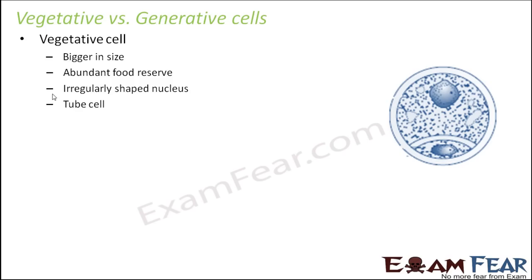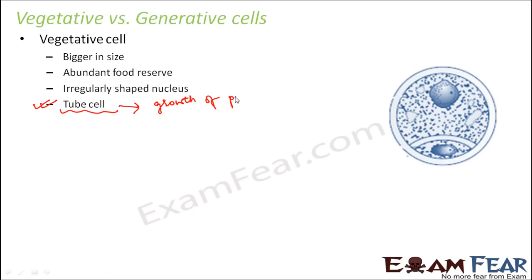The vegetative cell is also known as the tube cell. This is important. It is called the tube cell because it is responsible for the growth of the pollen tube, so it helps in the growth of the pollen tube.